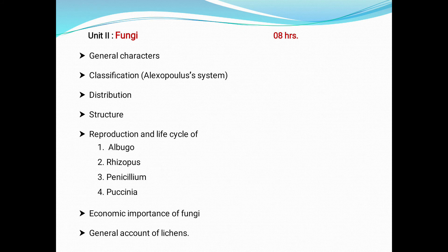Under Unit 2, fungi — the given period is 8 hours. Here we will study the general characters, classification, distribution, structure, and reproduction and life cycle of Albugo, Rhizopus, Penicillium and Puccinia. Here again, the economic importance of fungi and the general account of lichens.